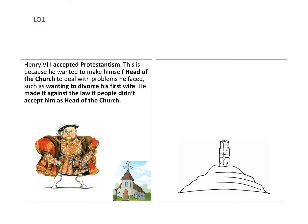Henry VIII accepted elements of Protestantism because he wanted to make himself head of the church, in order to deal with problems such as wanting to divorce his first wife. He made it against the law for people not to accept him as head of the church. Even though Henry broke from Rome, he still worshipped in quite Catholic ways and didn't adopt many of Martin Luther's new ideas — that came later under his son Edward and under Elizabeth. But he did adopt the key idea that he, as King of England, could be head of the church, enabling his divorce from Catherine of Aragon and his marriage to Anne Boleyn.